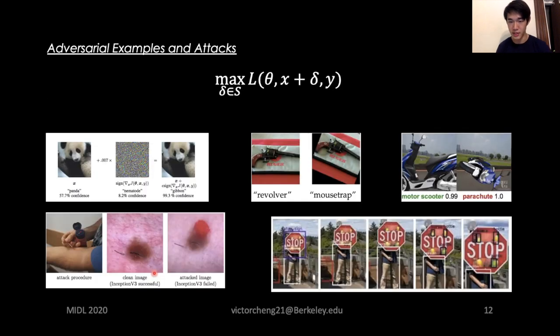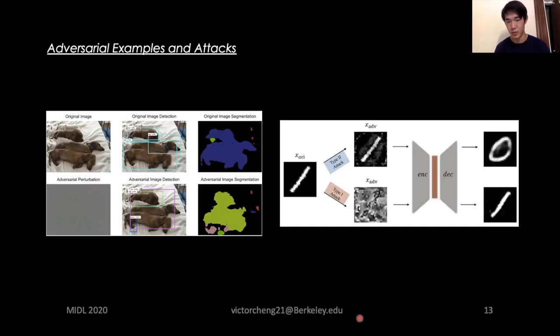The principle is that given the loss function, one can optimize the perturbation to the input sample such that the loss is maximized. This formulation is very general. It encompasses all types of adversarial attacks proposed, including the small perturbation attacks, 2D transformation attacks, 3D transformation attacks, and physical attacks. These attacks can be performed on many tasks, such as detection, segmentation, generation, and in our case, reconstruction.